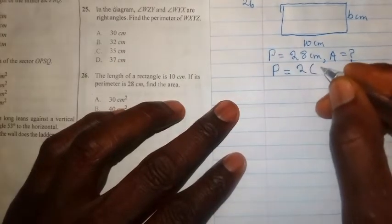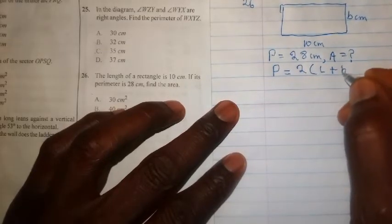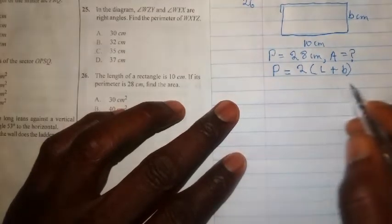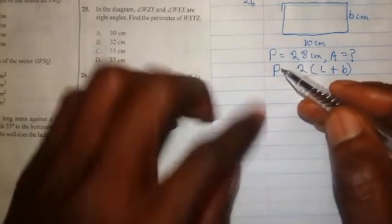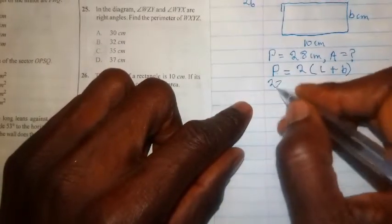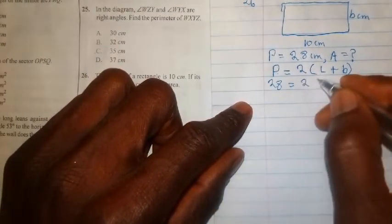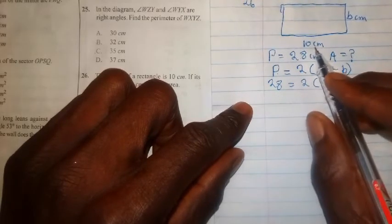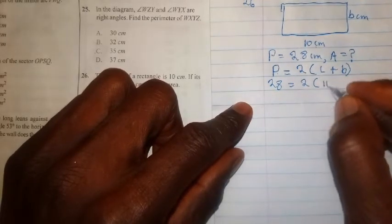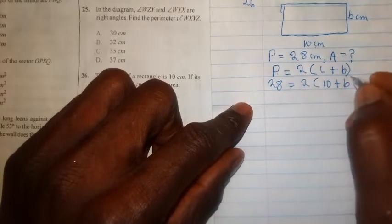This is the formula for the perimeter of a rectangle. Now we know that P from the question is 28, so 28 equals 2 into L. L is the length and the length is given to us as 10, so we write it out as 10 plus breadth.